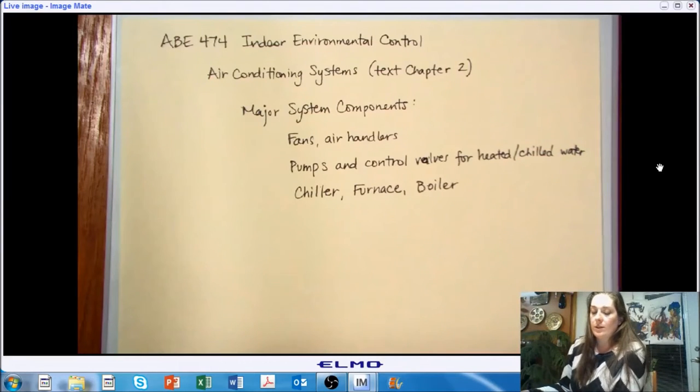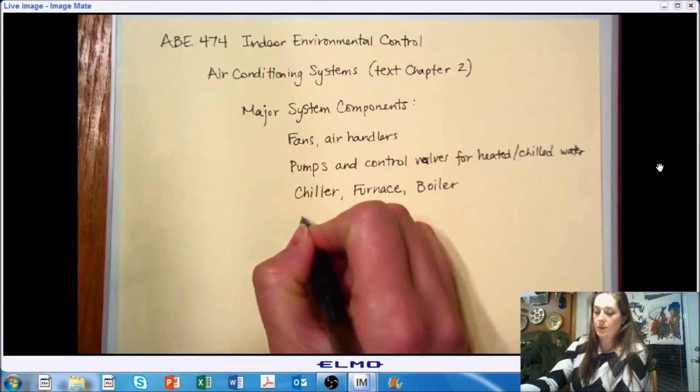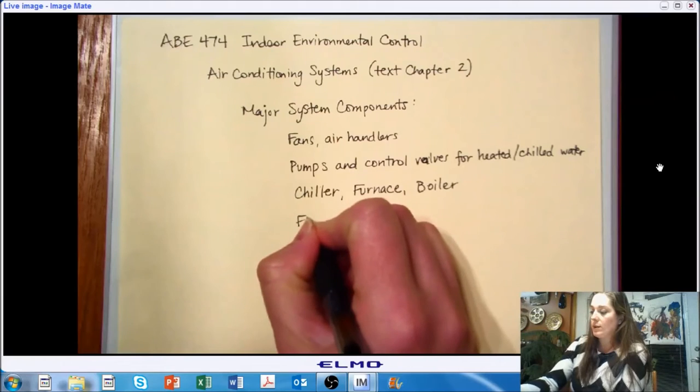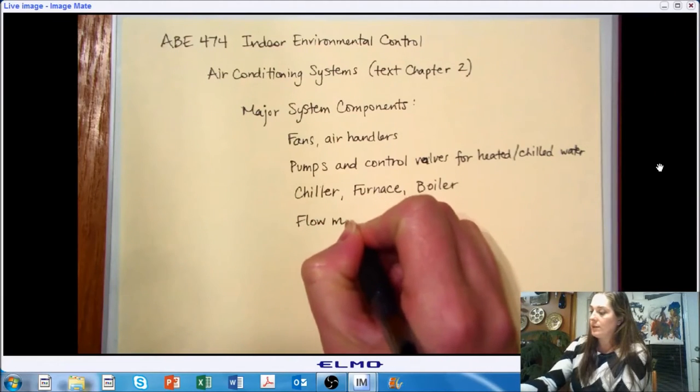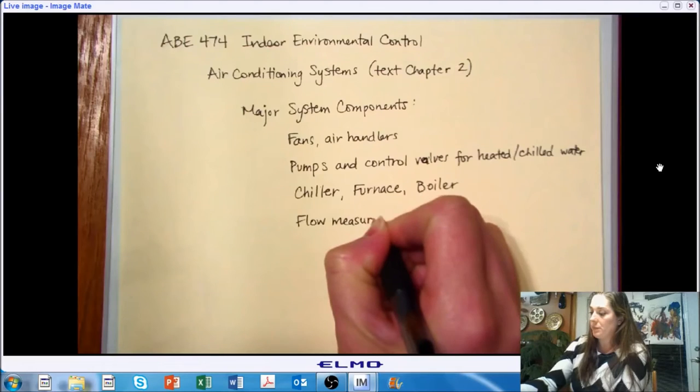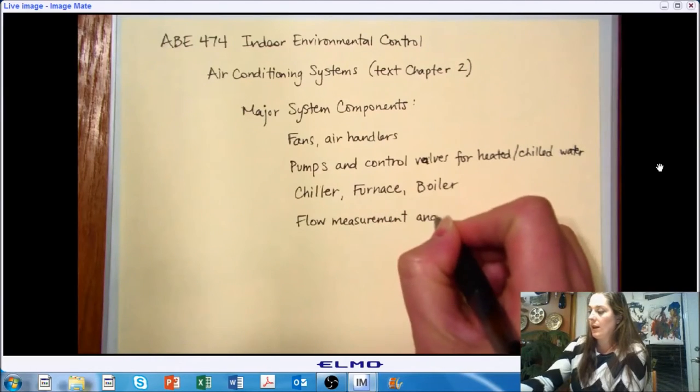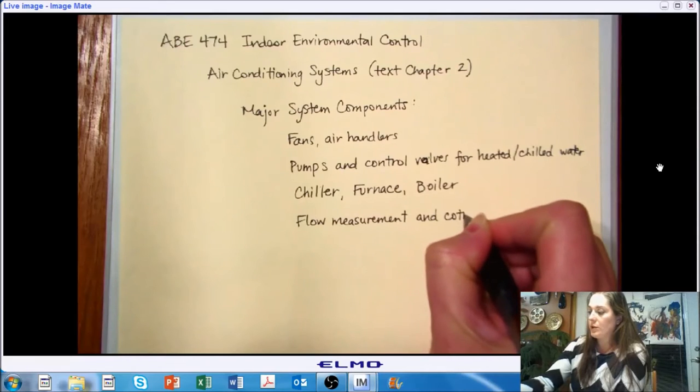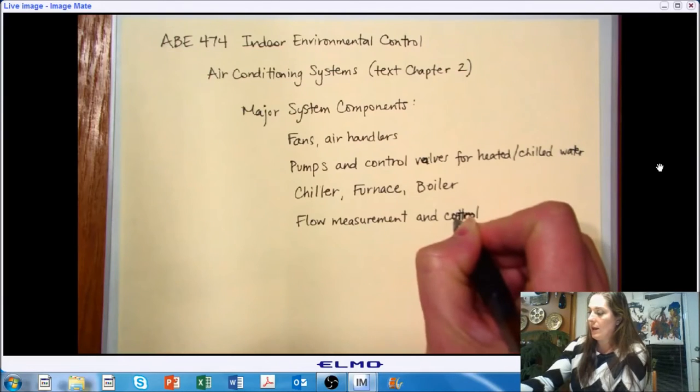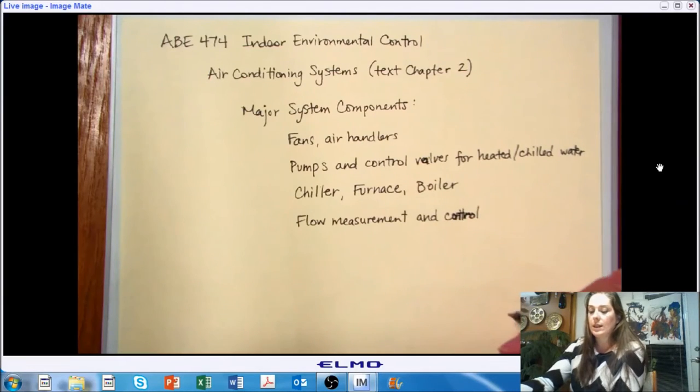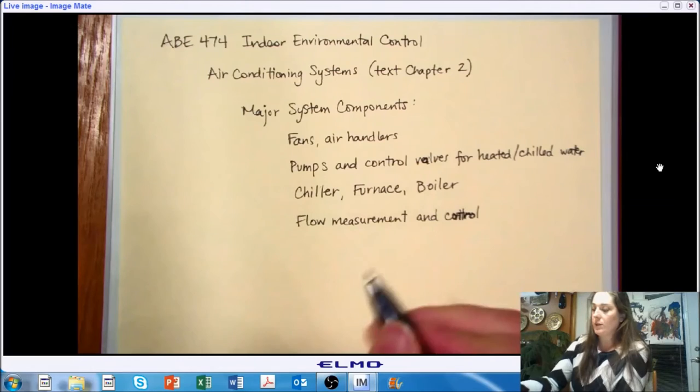We need some way to know how much air we're supplying and ensure that we're supplying it to the right place. So we may want to incorporate some kind of flow measurement. And we definitely want to include some sort of provisions for controlling the flow. So flow measurement and control. So that we know we're sending the air to the right place, the place where we intend it to be.